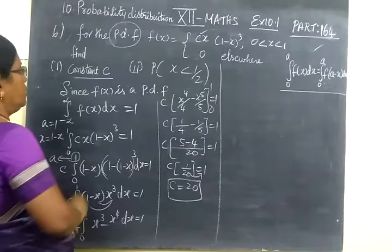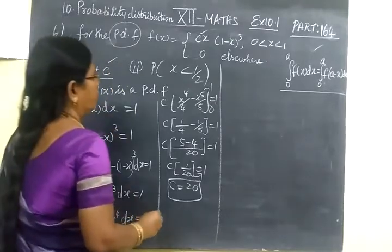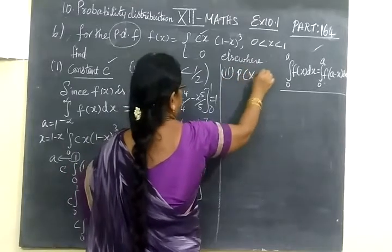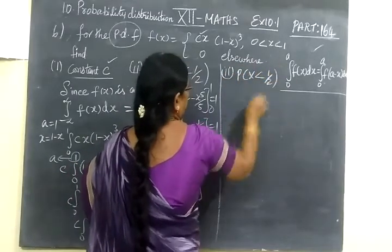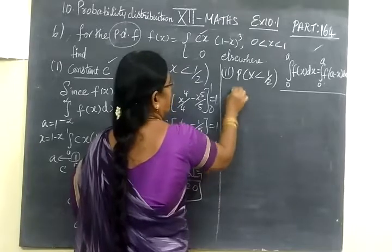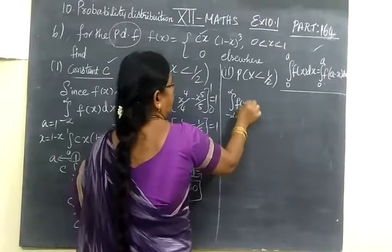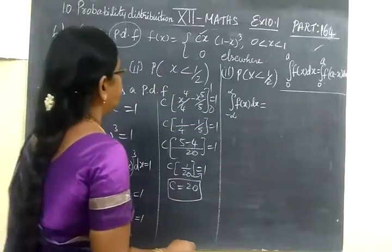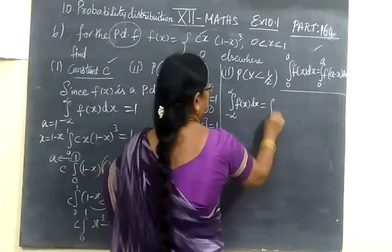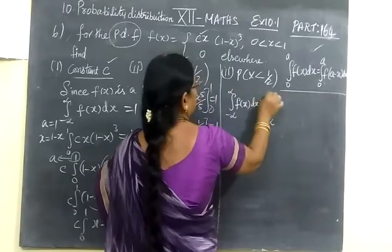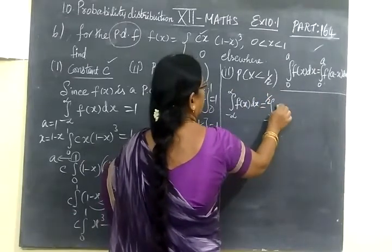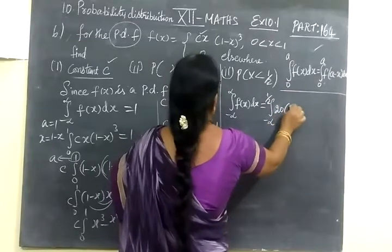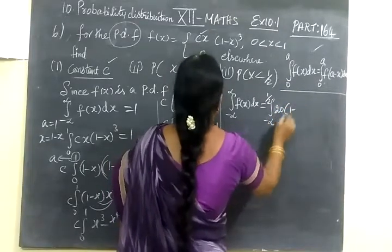You take this 20 this side. So we have found C value. Now this was the first one over. Now come to second one. P of x less than half. So again you take integral minus infinity to infinity f of x dx. So this is equal to minus infinity to half.